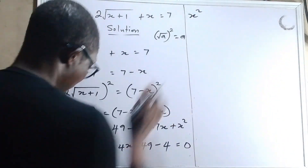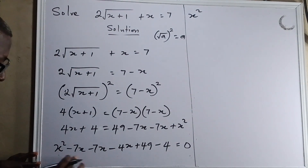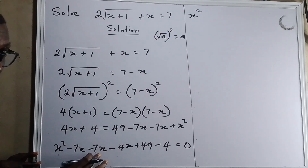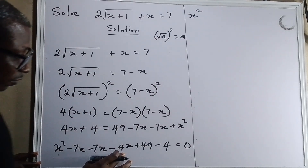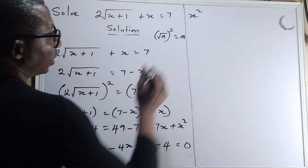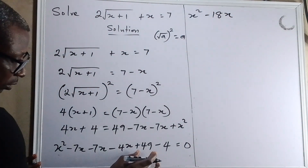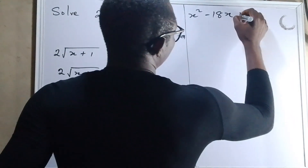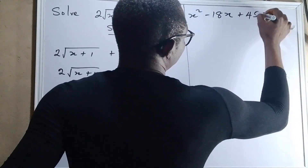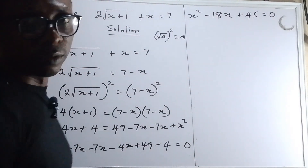So we have x squared. Now let's add the x terms together: minus 7x plus minus 7x plus minus 4x gives minus 18x. And combining the constants: 49 minus 4 gives plus 45, equals to 0. This is the quadratic equation.